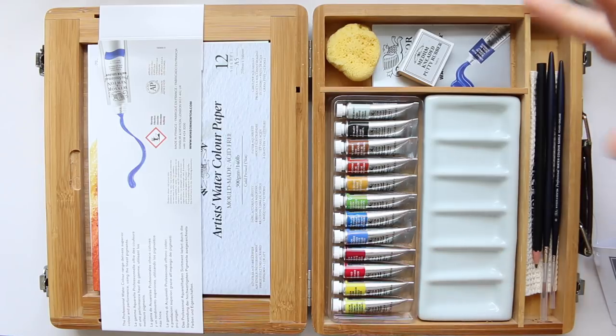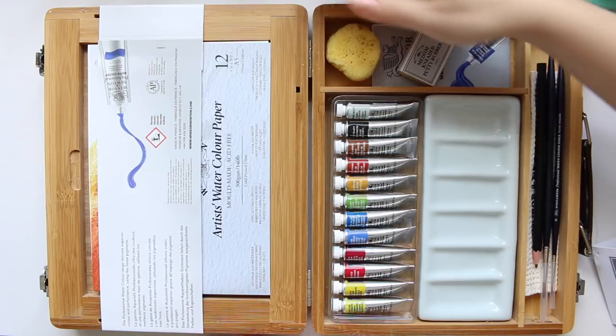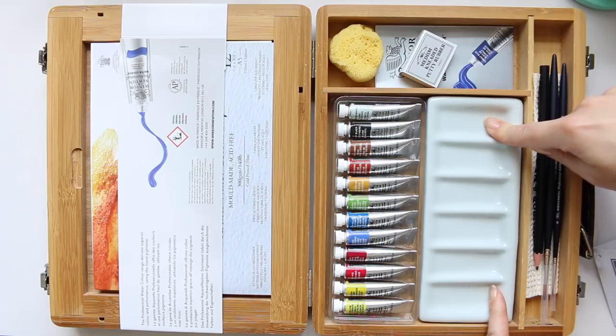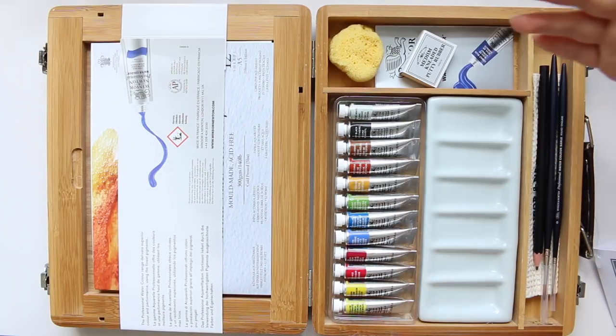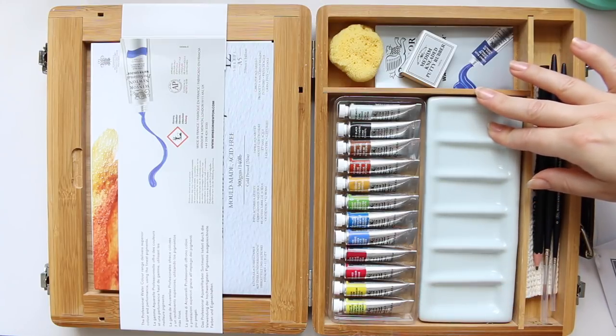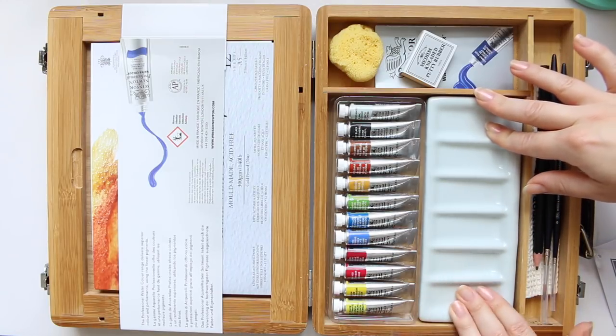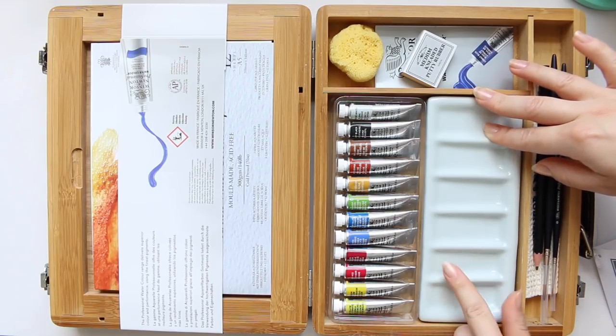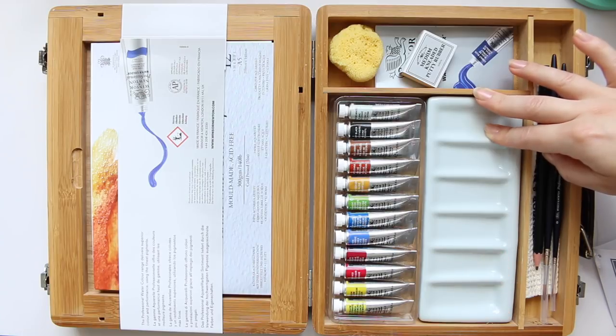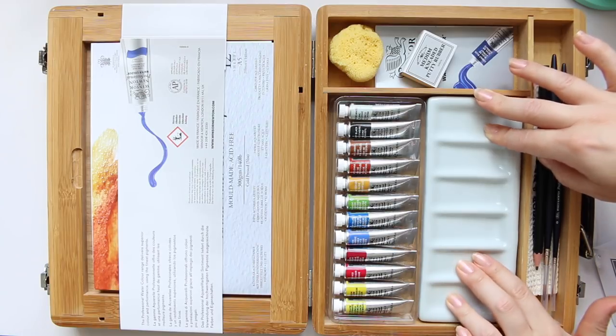The good thing about the ceramic or the porcelain palette is that you obviously, it's white and you will kind of mix up colors true to what you need them to be. And also they don't beat up as they do on metal or plastic pans. You can create lovely little puddles and as far as I know it doesn't get stained like plastic or metal palettes do.